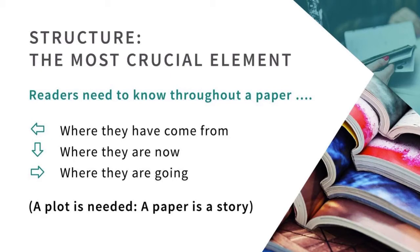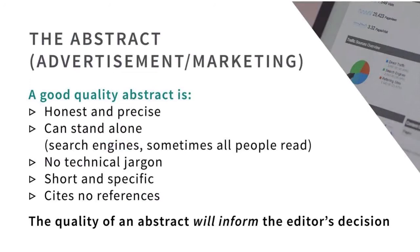Structure is so important. Your message, your audience, and your structure — readers need to know throughout an article where they've come from, where they are now, and where they're going. A plot is needed. Academic paper writing and editing is no different from any other kind of creative writing in this respect. That structure is needed. What makes a good quality abstract? It has to be honest and precise. It has to stand alone.